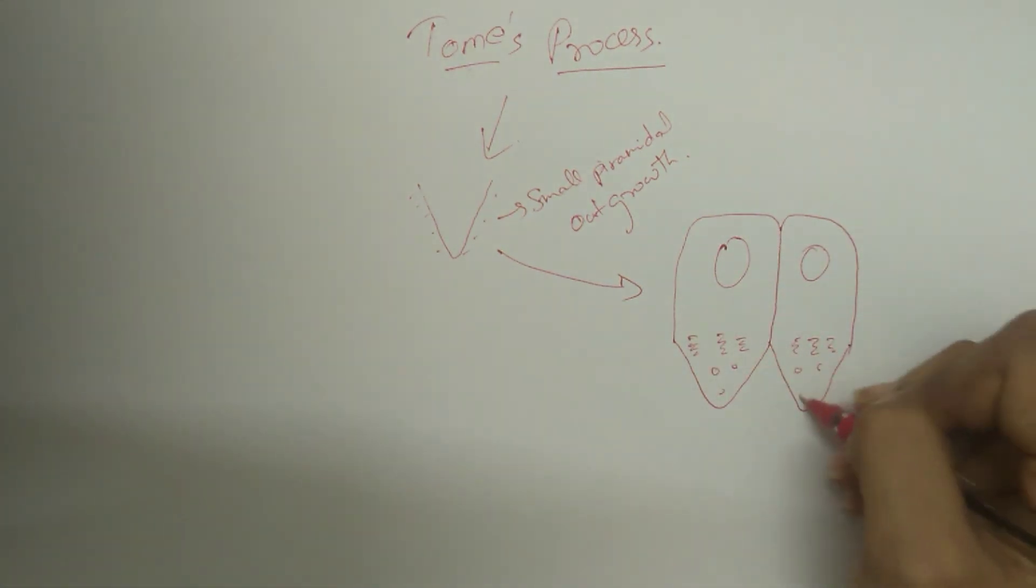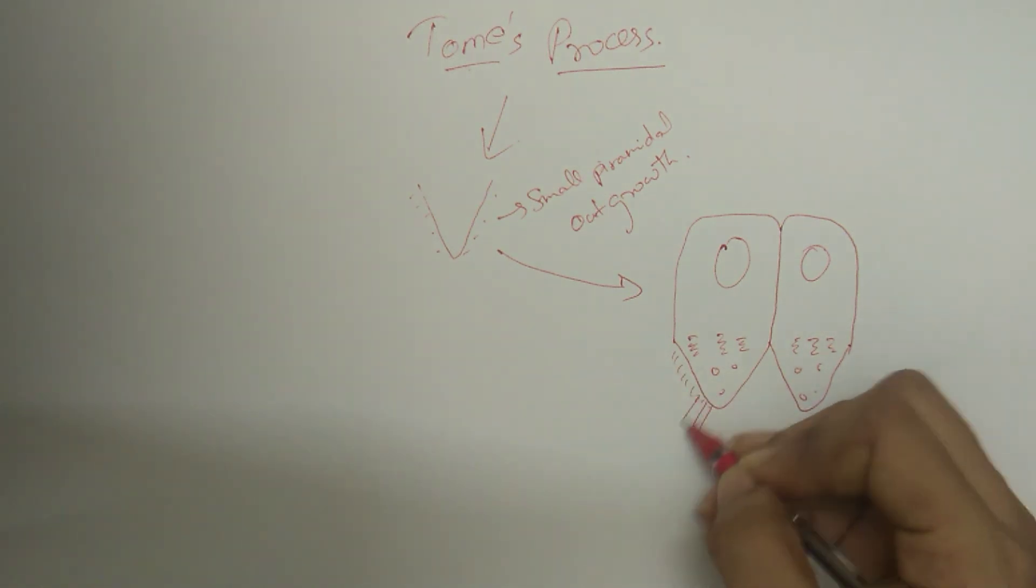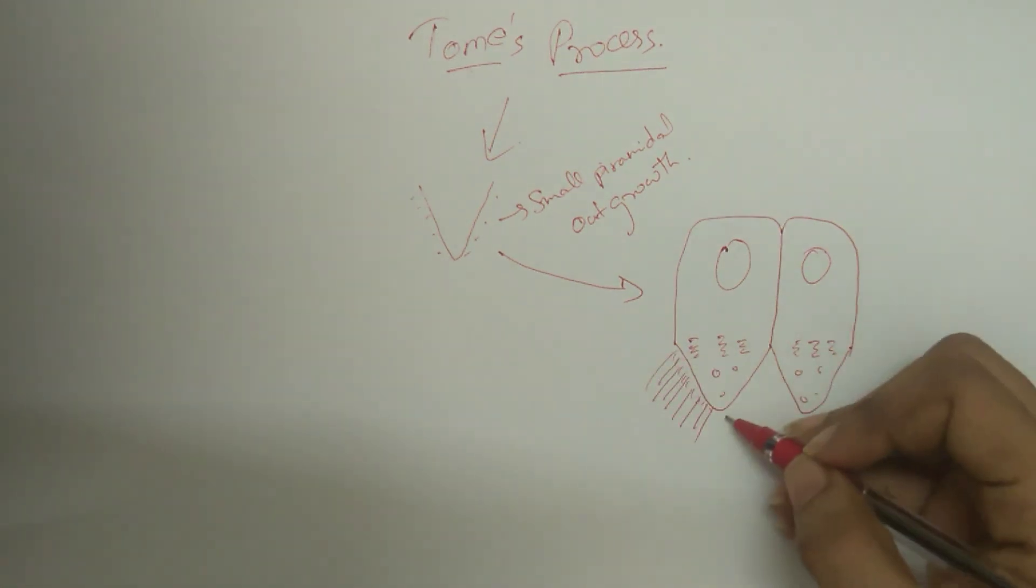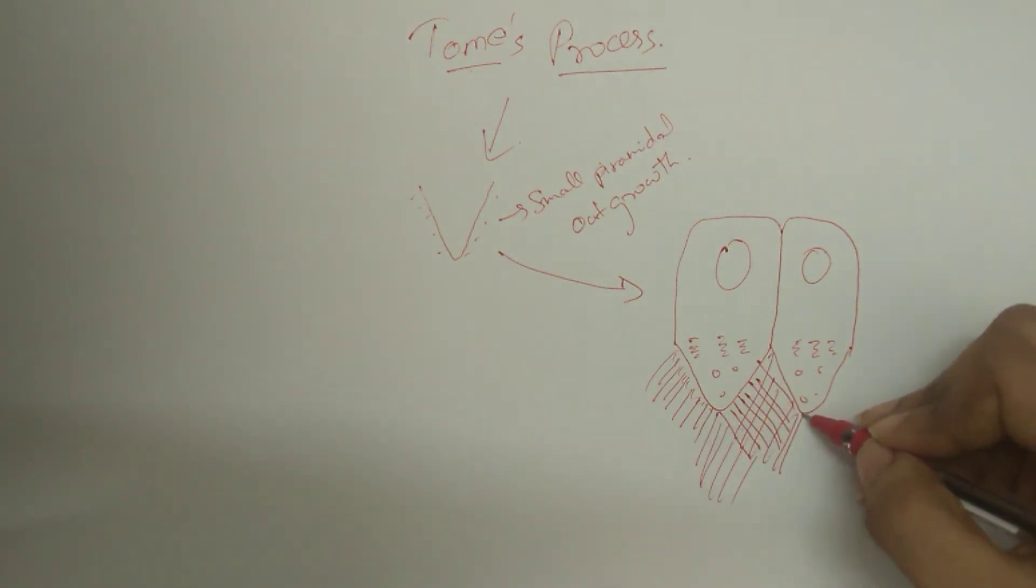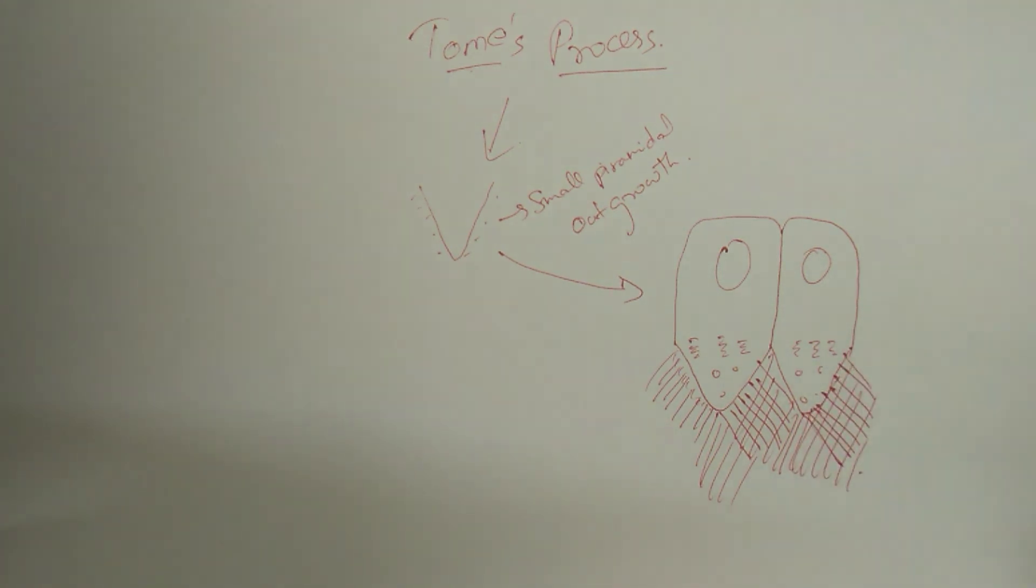The enamel secretion occurs at two sides of the Tomes process. The proximal end of the Tomes process contributes to the formation of inter-rod enamel, and its distal end contributes to the formation of the rods.